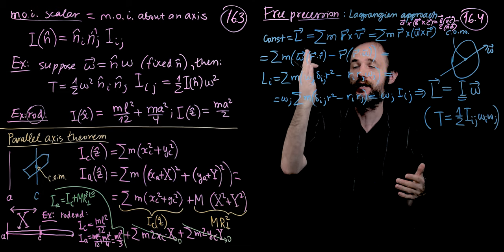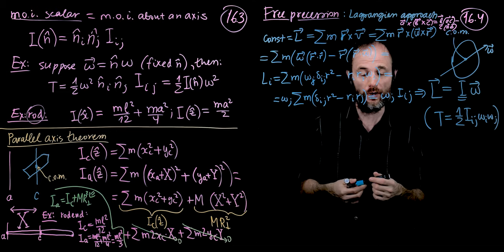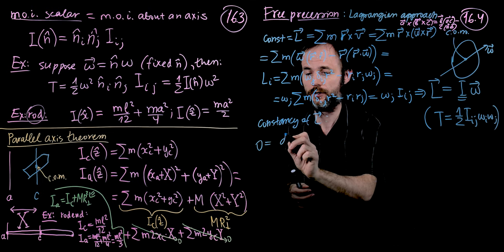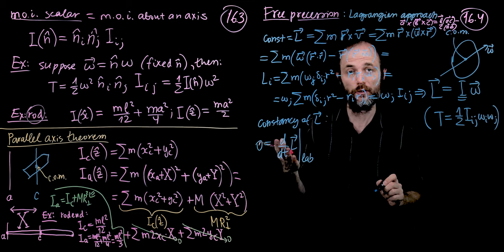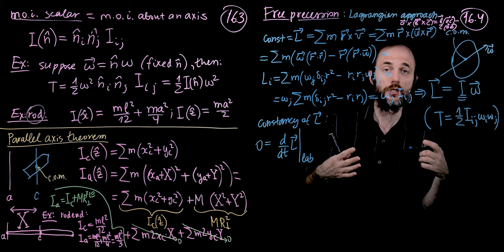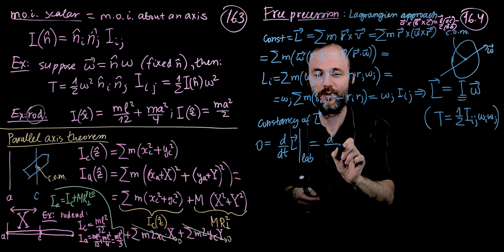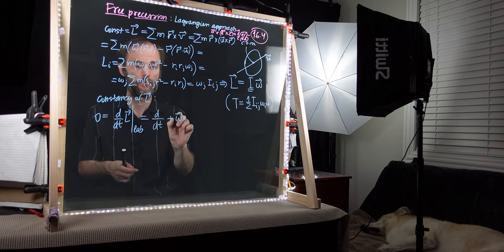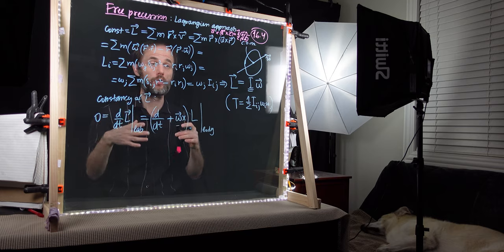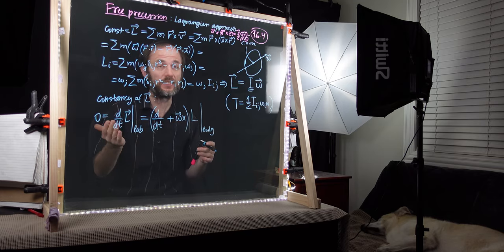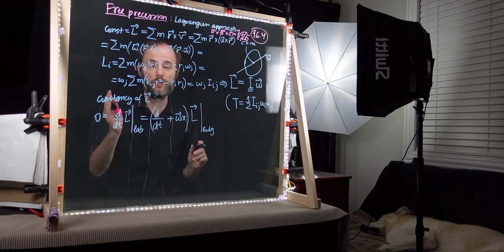Now let's use the fact that angular momentum is constant to derive the equations of motion. In the lab frame, constancy of L is simply d/dt of L equals zero. Because we want to write equations of motion in the body frame, we switch coordinates using the standard trick: when switching from the lab frame to a rotating frame at angular frequency omega, we replace the time derivative with d/dt plus omega cross. So the equation becomes (d/dt + omega cross) L equals zero.